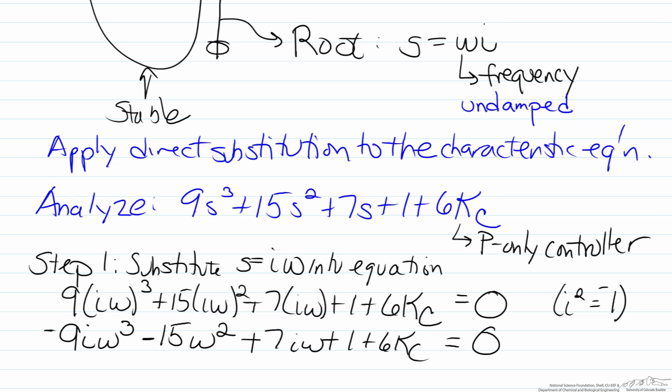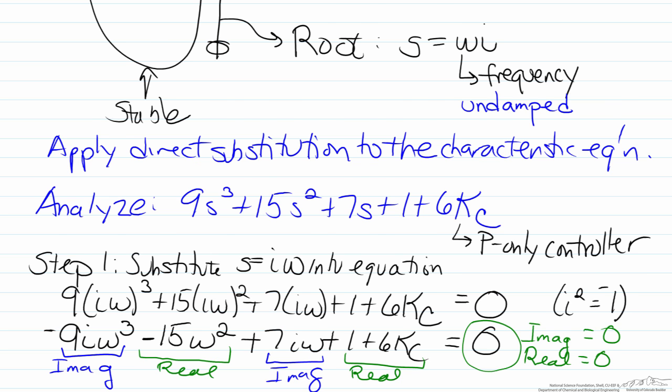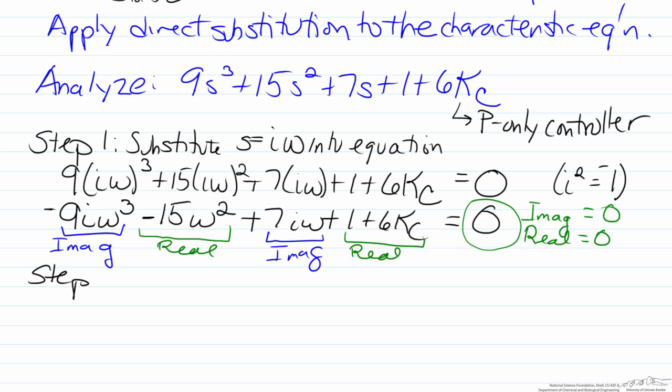We now have parts of this which contain i, which mean that they're imaginary, but we also have terms that do not have i and are therefore in the real part. If we look at the value on the right hand side here of zero that means that the imaginary part has to add up to zero and the real part has to add up to zero.